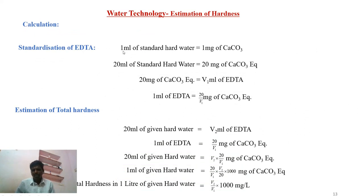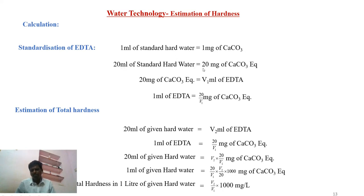Standardization calculation: we know that 1 ml of standard hard water is equal to 1 mg of calcium carbonate. Therefore, 1 ml of EDTA is equivalent to 1 ml of standard hard water, which equals 1 mg of calcium carbonate. For 20 ml of standard hard water, that equals 20 mg of calcium carbonate equivalent, and this is consumed by V1 ml of EDTA. So, 1 ml of EDTA equals 20/V1 mg of calcium carbonate equivalent.